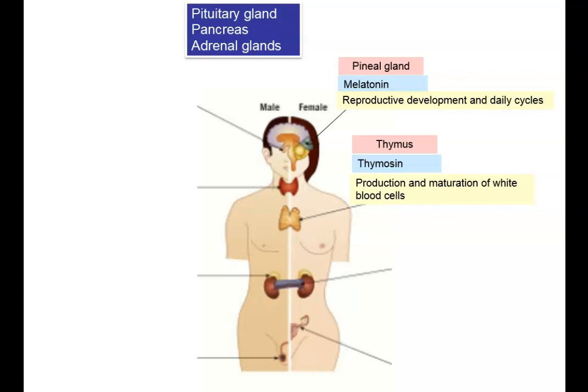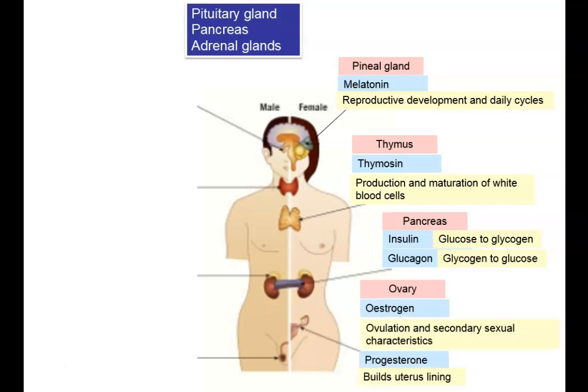The pancreas produces two hormones: insulin, which converts glucose to glycogen, and glucagon, which converts glycogen to glucose. In females, the ovaries produce estrogen and progesterone. Estrogen is used to thicken the uterus lining, and progesterone is produced once the egg has been released from the ovary from the scar tissue left behind — called the corpus luteum — and that progesterone readies the uterus for the arrival of the fertilised egg. In males, the testes produce testosterone, which is used for sperm production and secondary sexual characteristics.